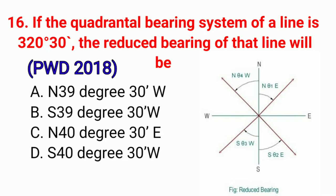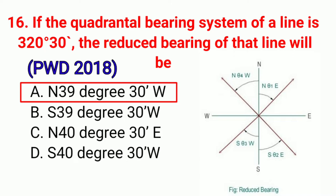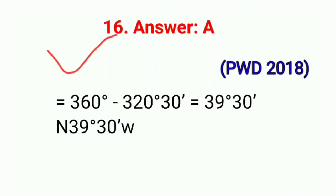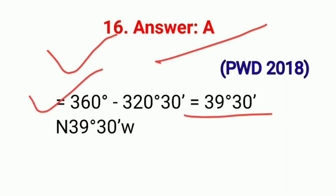Question No. 16. If the whole circle bearing of a line is 320°32', the reduced bearing of the line will be. Correct option A: North 39°32' West. Calculation: 360° − 320°32' = 39°32', which gives North 39°32' West. Correct option A.